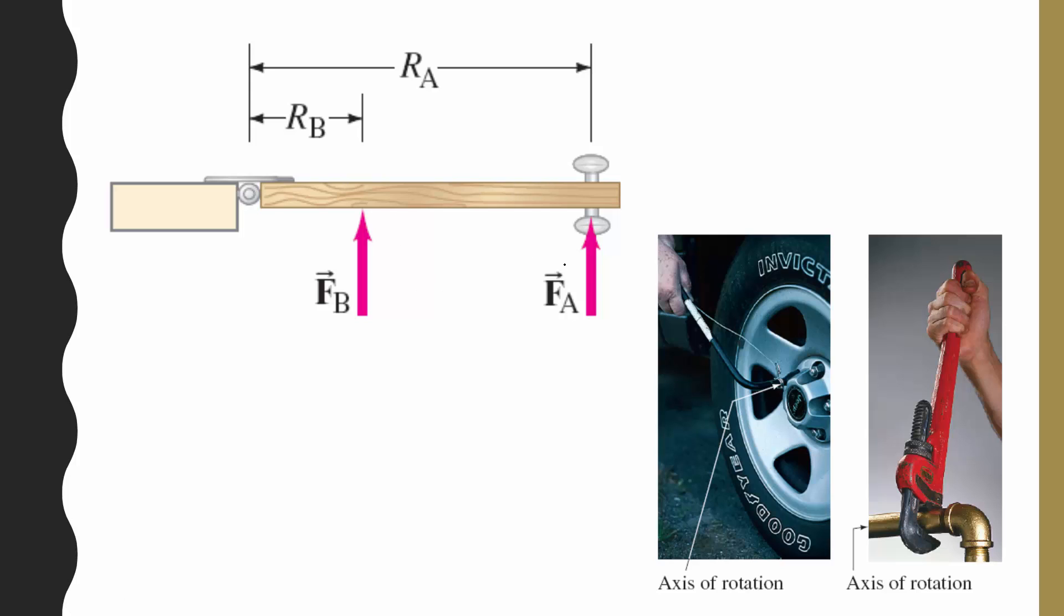Some experience might tell you that this one here is going to be more effective. So this is different from what we're used to. We can imagine these forces being exactly the same magnitude, but we're going to get different effects. So the location of the force relative to the axis of rotation, which in this case is the hinge, now makes a difference.